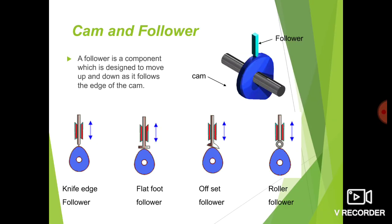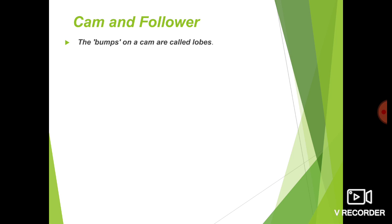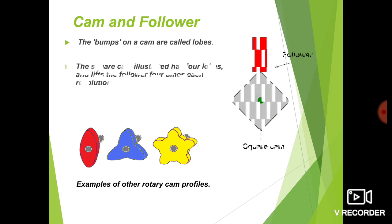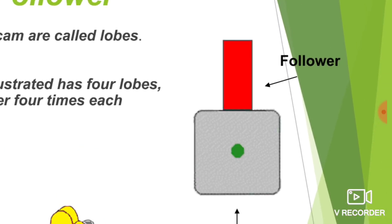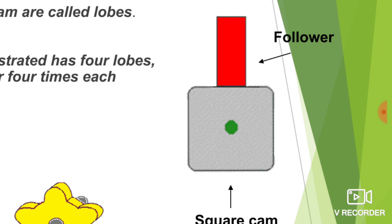These are the different types of follower: knife edge follower, flat face follower, offset follower, and roller follower. Now we will discuss the next topic, that is lobes. The bumps on a cam are called lobes. For example, here you can see the shape of the cam is square. As the square cam rotates, the follower will reciprocate, but the motion will not be uniform — the follower will experience certain jerks. Those bumps that cause jerks are called lobes.